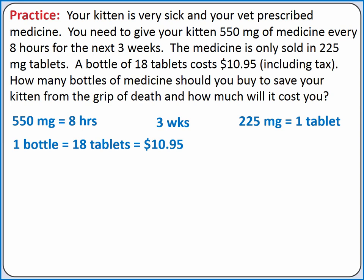Next, let's come up with a plan for our unit conversion. Our only stand-alone piece of information in this problem is 3 weeks. In general, it can be helpful to start your dimensional analysis with stand-alone information. So we'll start with 3 weeks and convert it eventually into bottles and then dollars.